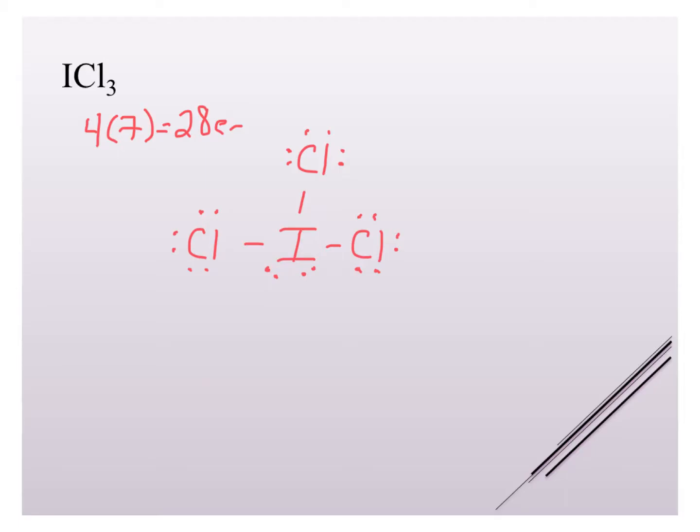Everybody has an octet except iodine, which has an expanded octet. I don't need to look at double bonds because that's only going to help me get more electrons around an atom, and I don't need to get more. Iodine is perfectly fine to have an expanded octet because it's not in the second period.